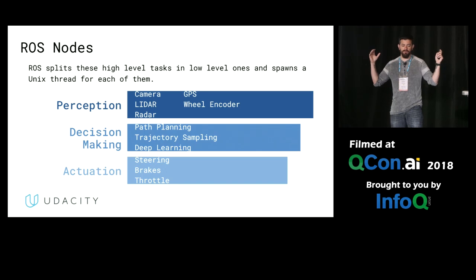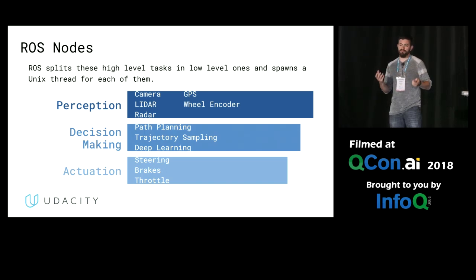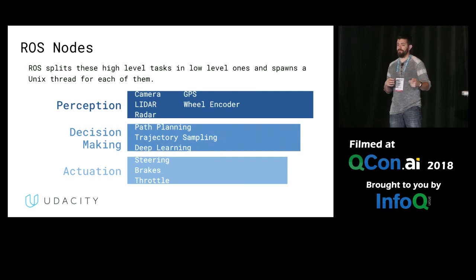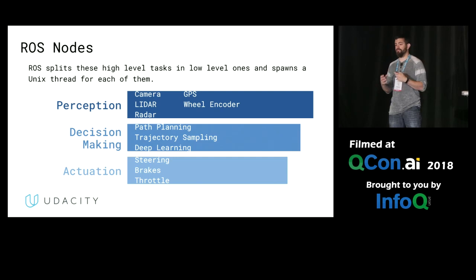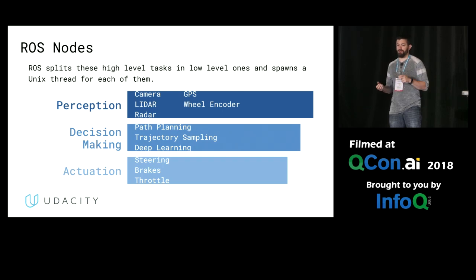ROS nodes take those very high-level tasks and break them into lower-level ones. You have these different ROS nodes that run on different Unix threads. For your perception, you can have one for your camera, one for your LiDAR, wheel encoder, and all the different sensors. For decision-making, you can have one for each of the different algorithms you're running. And then for the actuation — with a self-driving car, brakes, steering, and throttle are probably the minimum that you want to have working.